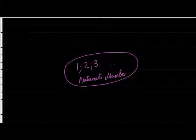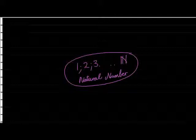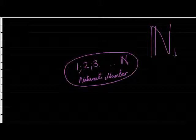Because that's how numbers occur in the natural world, we call them natural numbers. Natural numbers are all the whole numbers, but it excludes 0 and also no negative numbers. The symbol we use for natural numbers is an N with a subscript 1, because it starts with 1.